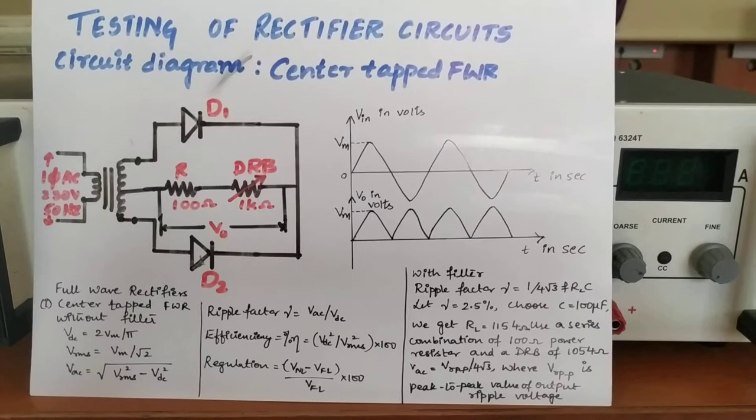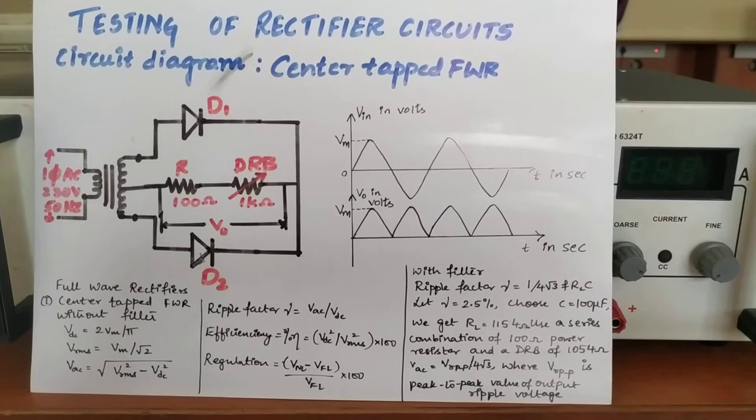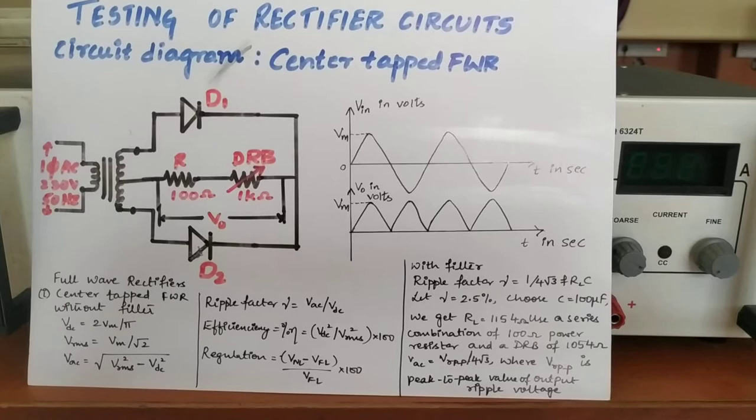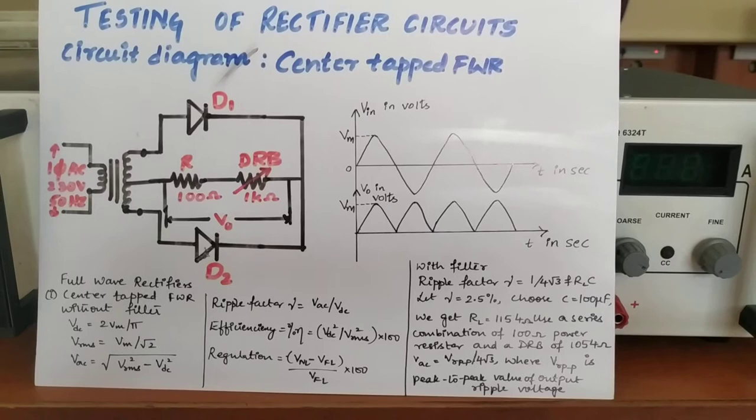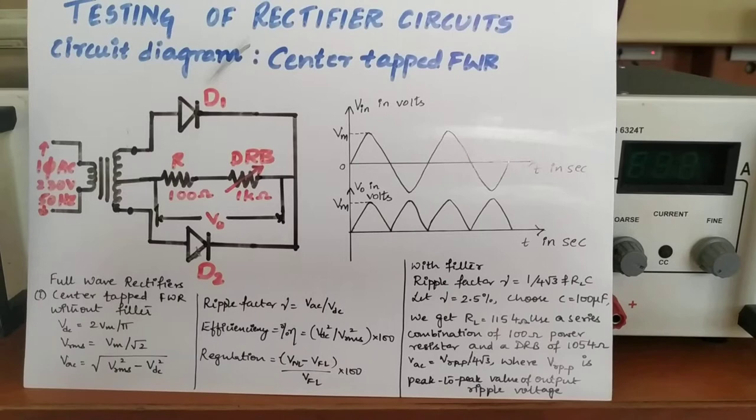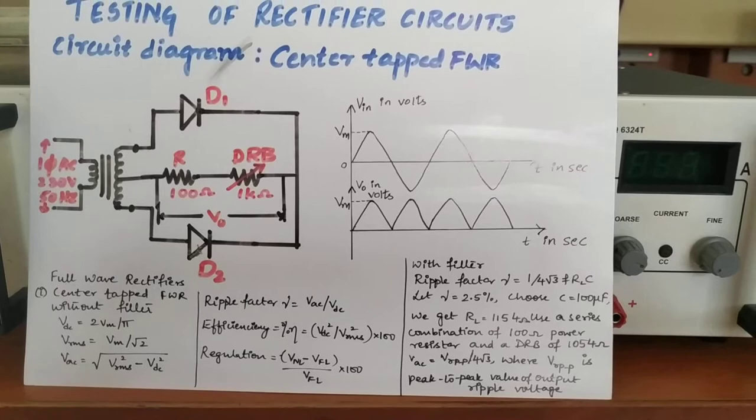In the full wave rectifier, both half cycles — that is, both the negative and positive polarities — will be rectified. Again, in the full wave rectifier, we have two types: one is the center tap rectifier, and the other is called bridge wave rectifier. Compared to the half wave rectifier, full wave rectifier efficiency is more because it converts both half cycles of the waveform to a DC waveform.